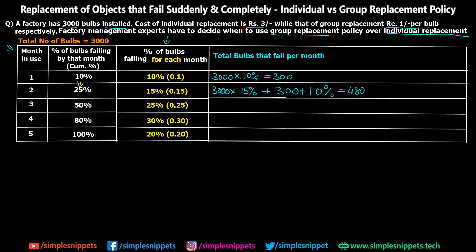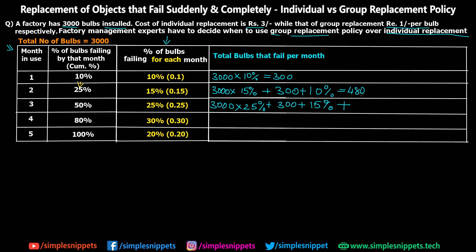For the third month, out of 3000 bulbs, 25% are going to be failing. Additionally, those 300 bulbs replaced after month one have now crossed the two-month mark, so for them we apply the 15% second-month rate: 300 × 15%. And now the 480 new bulbs added in the previous month are only one month old, so for them we apply 10%: 480 × 10%. This gives us a total of 843 bulbs failing in the third month.